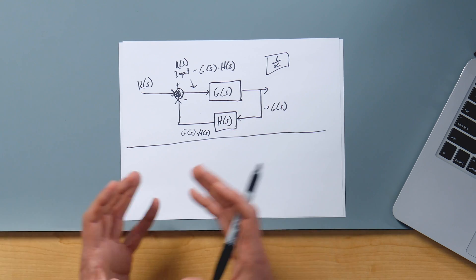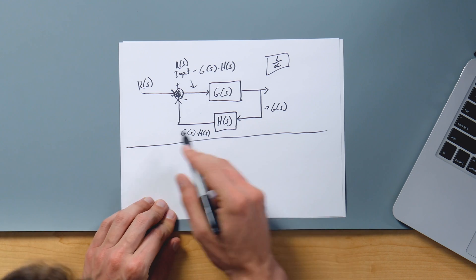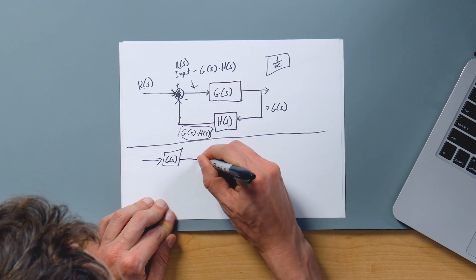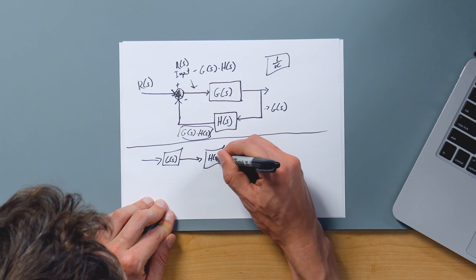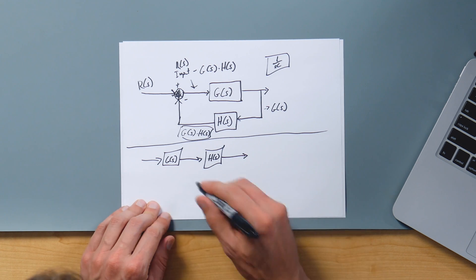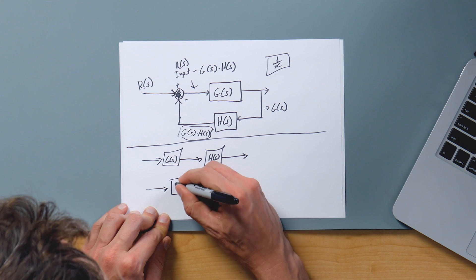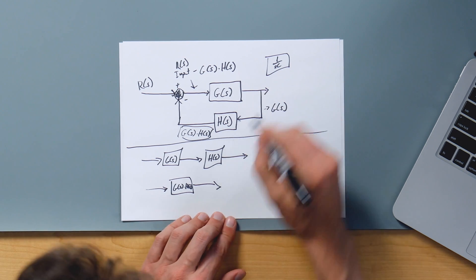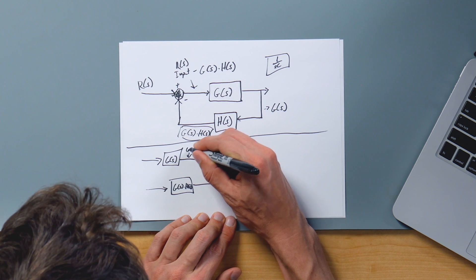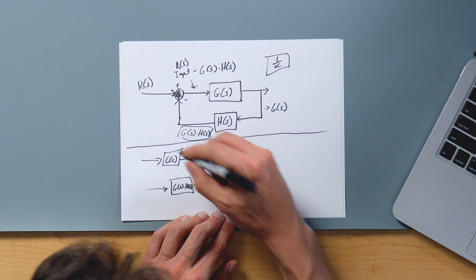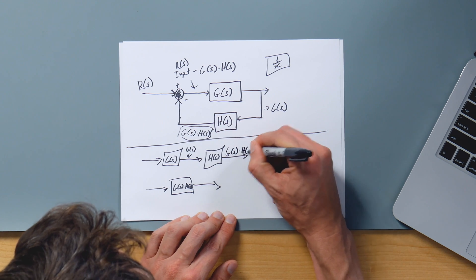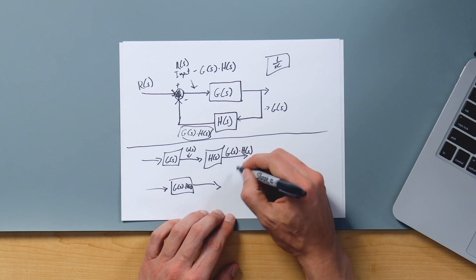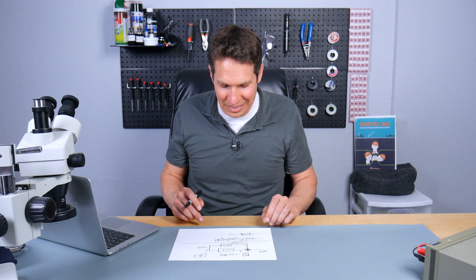One of the first things we can do is simplify by putting two blocks together in cascade — it's quite straightforward. If you have G(s) and then it goes over to H(s) and then you're going out, you can represent that with an equivalent diagram that says G(s) times H(s) as a single block with an output. Because G(s) is the output of the first block, and you're putting that into your H(s) system — so you're multiplying the two. That's putting the blocks in cascade.